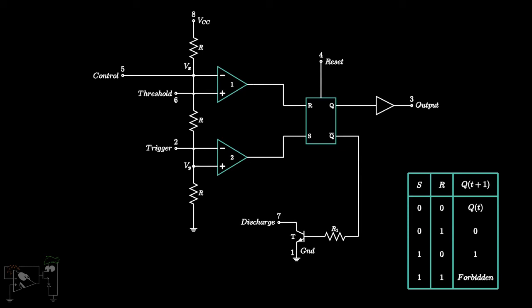There is one more pin which we can use to control the timings. The pin number 5 is known as the control pin. It is directly connected to the inverting terminal of comparator 1.